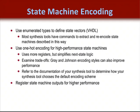Your finite state machine encoding is important for both size and speed, especially if it is large and complex. Most synthesis tools have commands to encode finite state machines when enumerated types are used, but this is not always the best choice. I recommend building the machine and then synthesizing for binary, one-hot, and gray encoding, then comparing speed and size. One-hot encoding is thought to build the fastest finite state machine, but this is not always true — it depends on the complexity, number of inputs, and number of states.